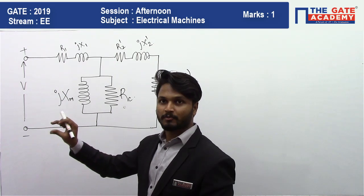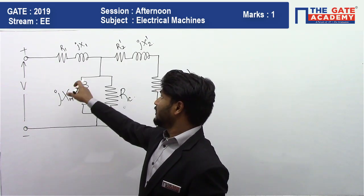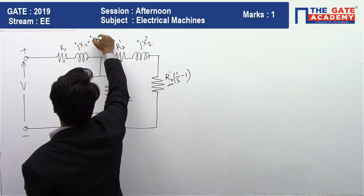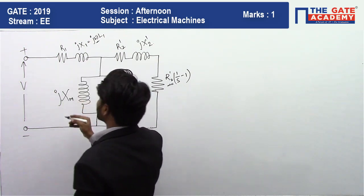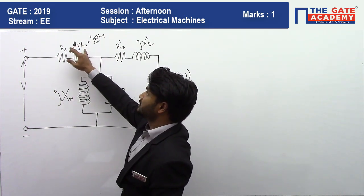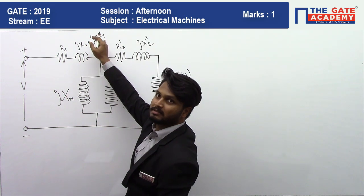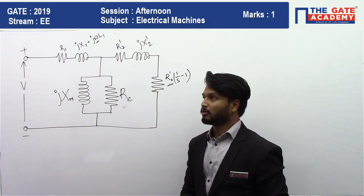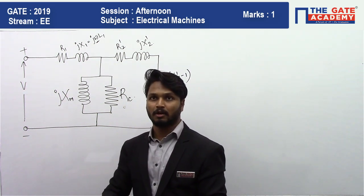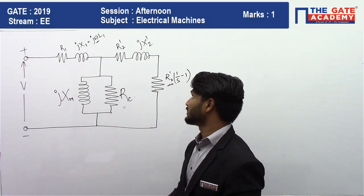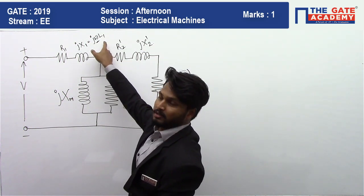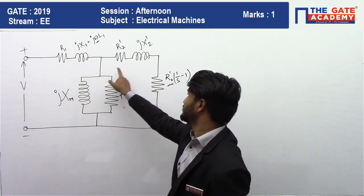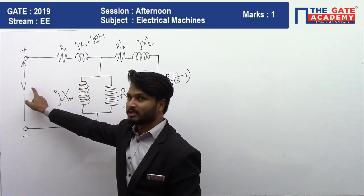X1 can be written as j·ω·L1. This reactance depends on frequency, and the inductance L1 depends on how well the stator flux links with the rotor — that is, the physical construction. Therefore X1 does not change with voltage. Similarly, the rotor leakage reactance X2 dash also does not change with voltage.